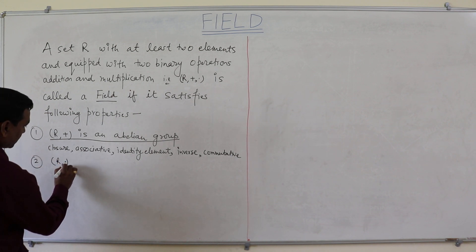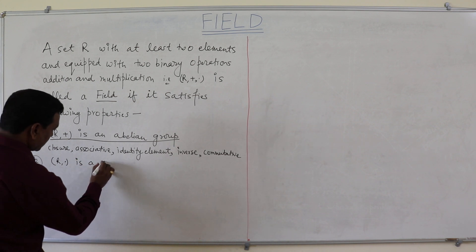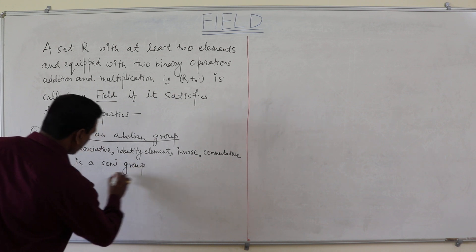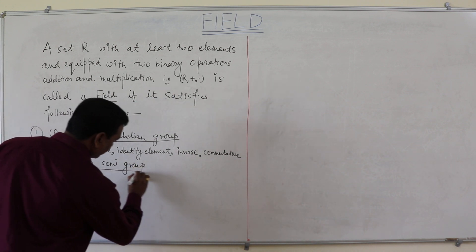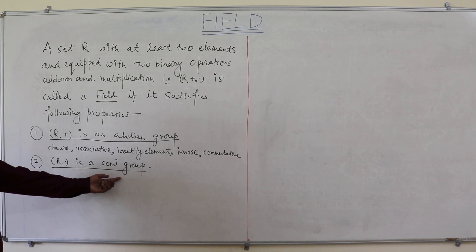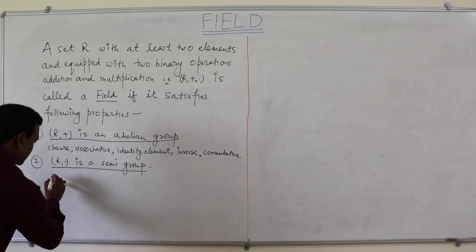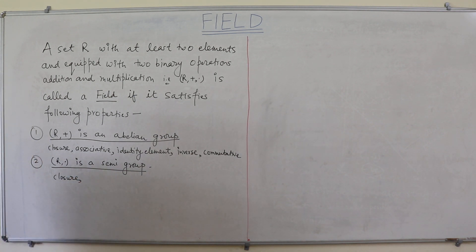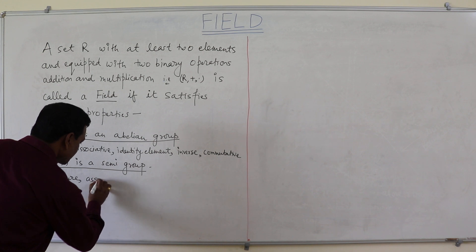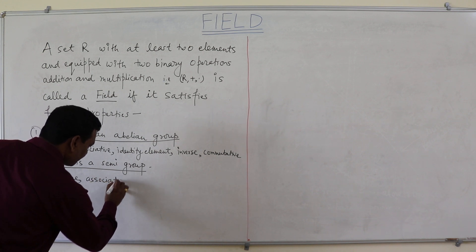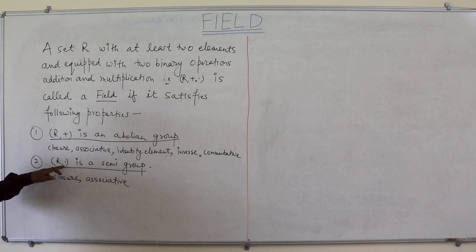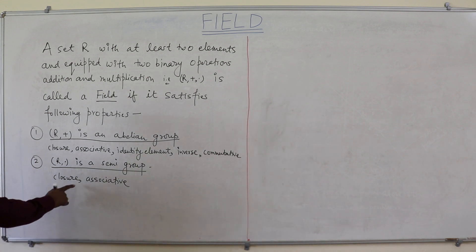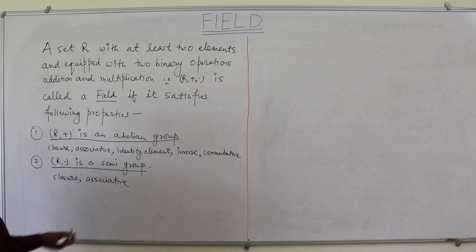Second property: (R, ·) is a semigroup. This means it will have two properties — closure and associativity with respect to multiplication. So with respect to addition there will be five properties, and with respect to multiplication the set will be a semigroup.